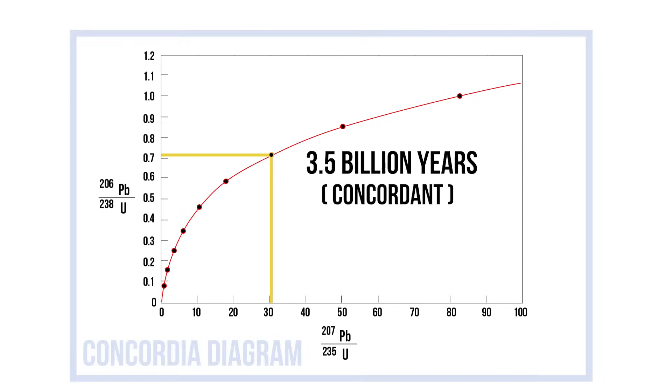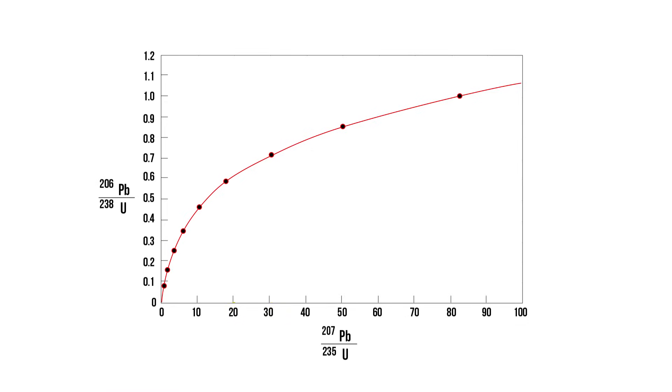If the two isotopic ratios of lead to uranium don't give the same age, they won't plot on the curve. This tells us that something may have happened that let some lead escape from zircon. The older the rock, and the more events it experienced over its lifetime, the more likely this lead escape may be to happen. We'll see some examples later.